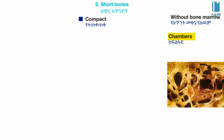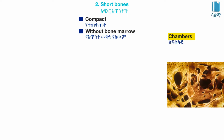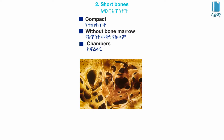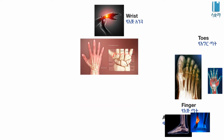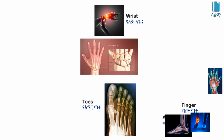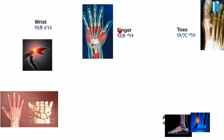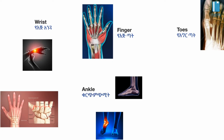Some bones are compact without bone marrow. They have chambers and partitions. Examples of short bones include the wrist, the tooth, the finger, and the ankle.